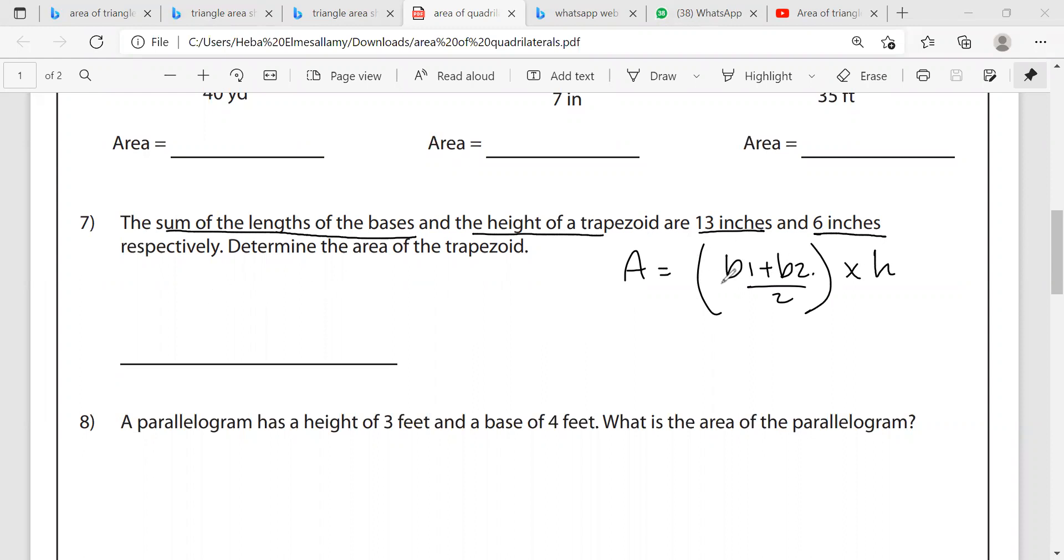So I'm going to substitute: remove B1 plus B2 and replace it with 13 because 13 is the sum of the lengths of the bases. So instead of B1 plus B2, I will drop 13. Instead of H, I will drop six. Area equals 13 divided by 2 multiplied by 6, which is 13 multiplied by 3. 6 divided by 2 is 3. So at the end, I have 39. And the final answer is inch squared.